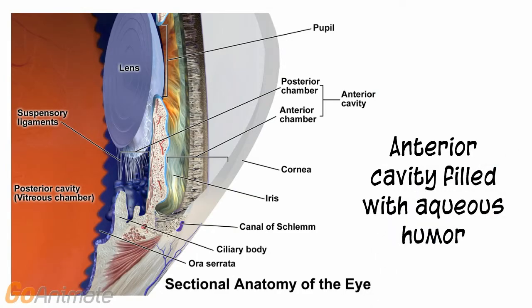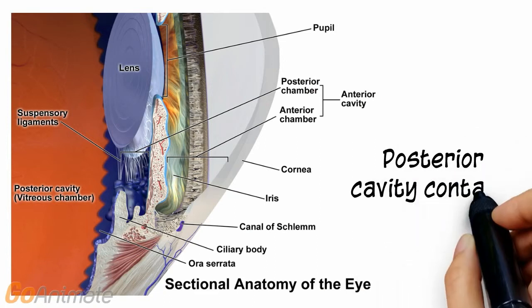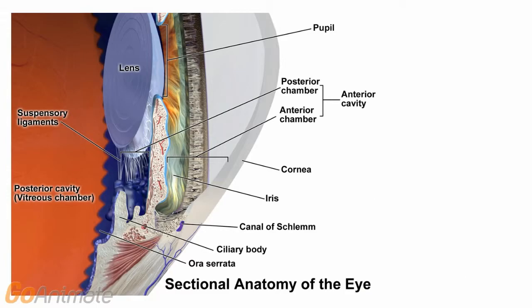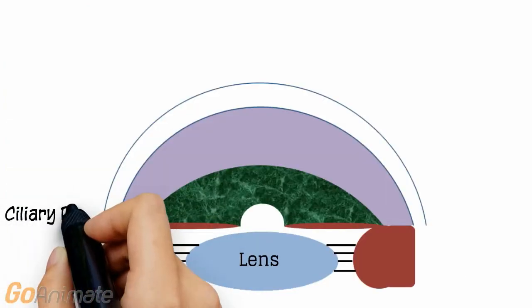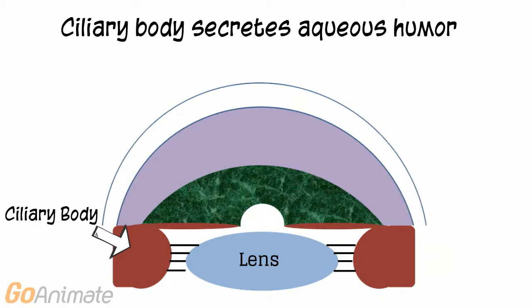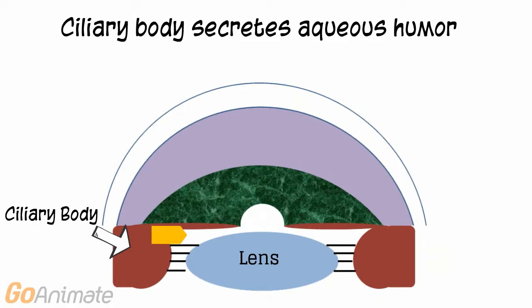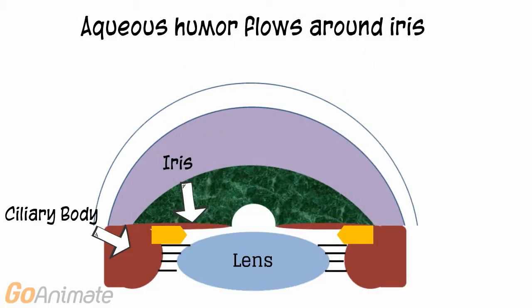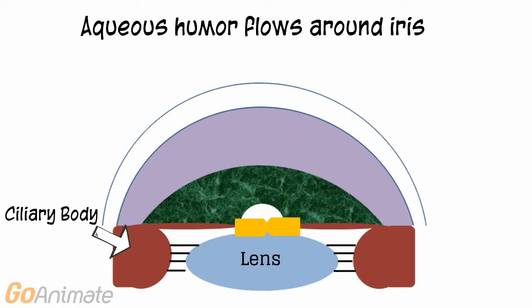The anterior cavity is filled with a fluid called aqueous humor. The posterior cavity contains the vitreous body and vitreous humor. Aqueous humor is secreted by the ciliary body, which also holds the lens in place by suspensory ligaments. The fluid flows around the iris and drains via the scleral venous sinus, or canal of Schlemm.